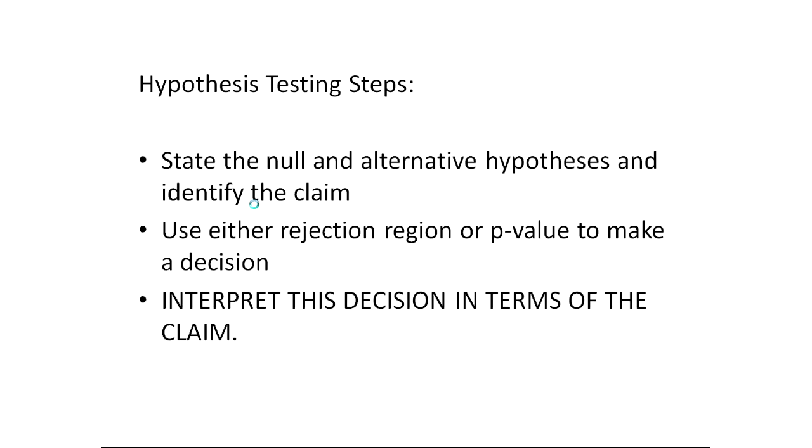As a conclusion, the way to think about our overall method for hypothesis testing, we're going to state the null and alternative. We're going to use either the rejection region method or the p-value method to make our decision. So that's our evidence in a way. And then the biggest, most important thing is we're going to interpret this in terms of the claim. So we're going to say, what does this actually say for our hypothesis that we have?